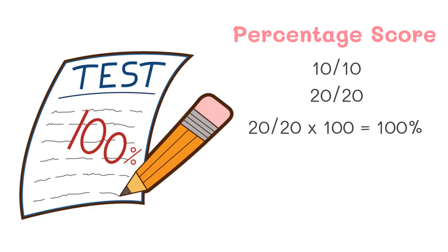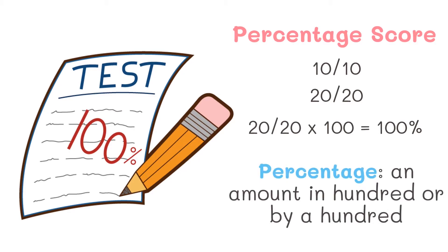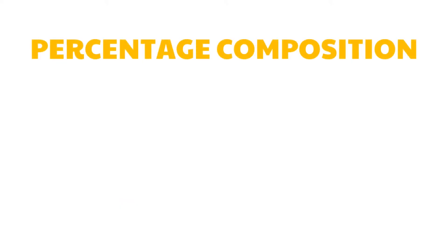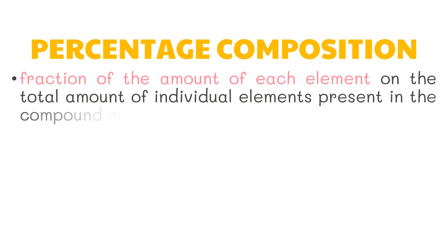Why do we need to multiply the percentage score by 100? This is because percentage means an amount in 100, or per 100. The percentage composition of any given compound is identified as the fraction of the amount of each element over the total amount of all elements present in the compound, multiplied by 100.